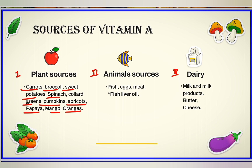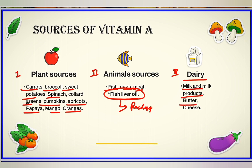In animal sources, fish, eggs, meat, and fish liver oil are rich sources of vitamin A, with fish liver oil found to be one of the richest sources. From dairy products, milk and milk products like butter and cheese are rich sources of vitamin A.